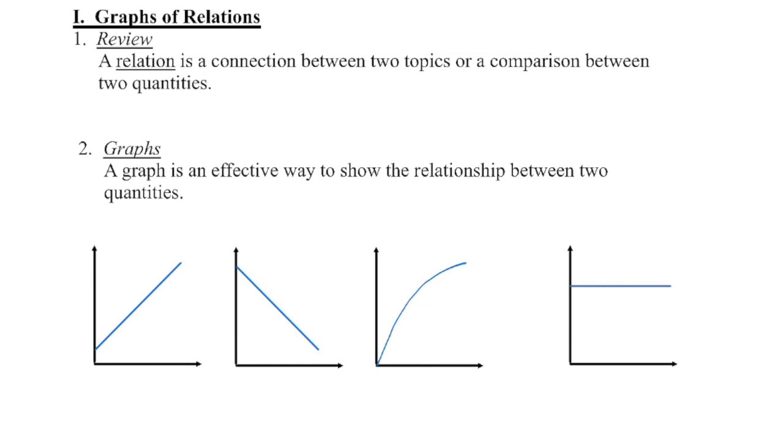When we create a graph, one of those topics or quantities we label on the x-axis, the other topic or quantity we label on the y-axis. Now, I have four different graphs here. Two of them show a constant rate of change, one of them shows no rate of change, and one of them shows a rate of change that is not constant. I want you to pause the video and label which one you think is which.